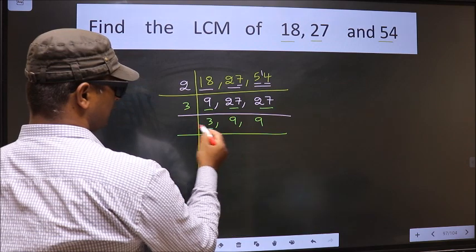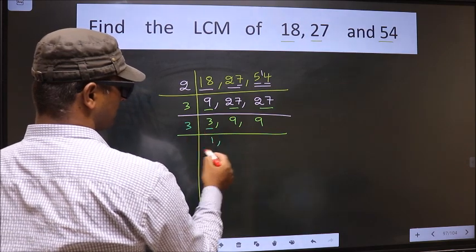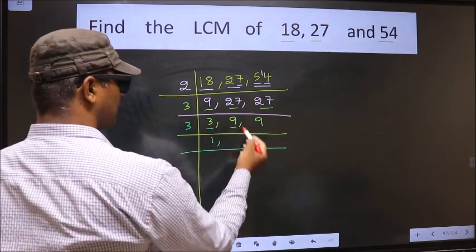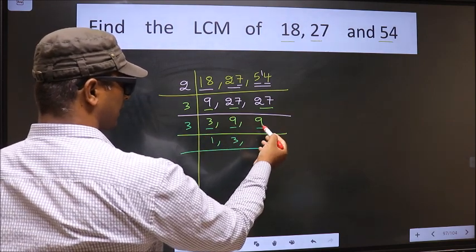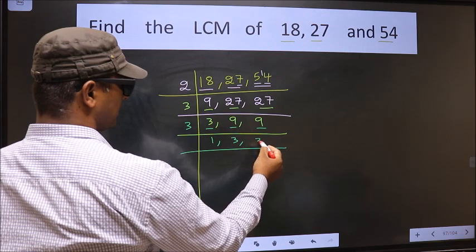Now here we have 3. 3 is a prime number, so 3 once is 3. The other number, 9. When do we get 9 in the 3 table? 3 threes is 9. The other number, 9. When do we get 9 in the 3 table? 3 threes is 9.